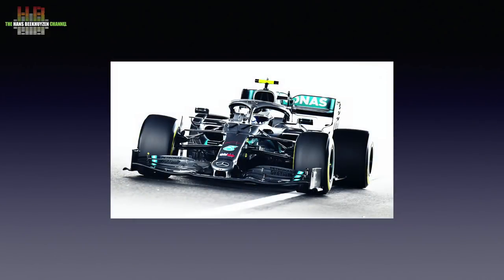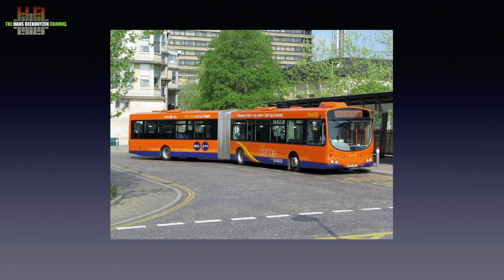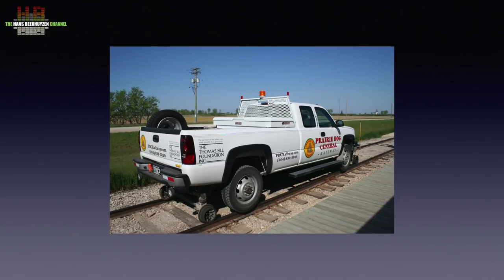Just as cars have four wheels, an engine, gearbox and steering wheel, but some cars are clearly purpose built, like a Formula One car, bendy buses and those funny pickup trucks that ride on rail tracks.